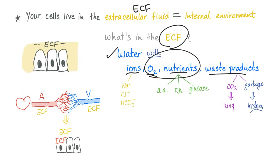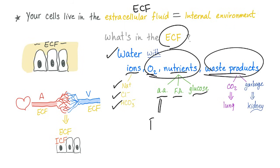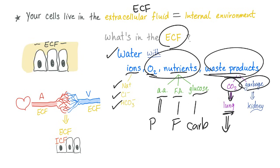We have the good stuff and the bad stuff. Ions such as sodium, chloride, and bicarbonate. Nutrients such as amino acids, fatty acids, and glucose — the building blocks of protein, fat, and carbs. The waste products include CO2, which goes to the lungs to be exhaled, and some other waste going to the kidney to be excreted in the form of urine.